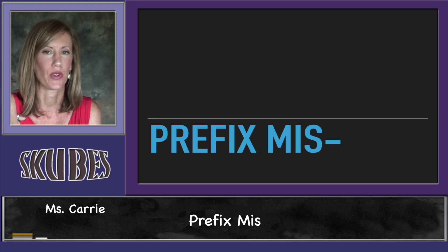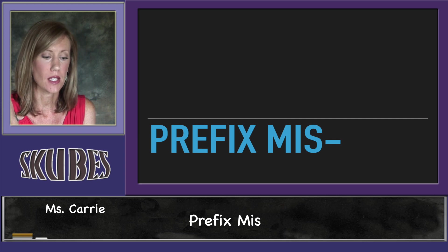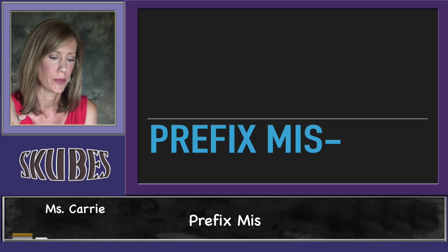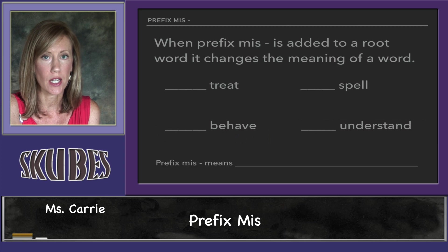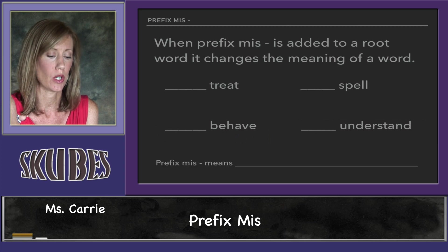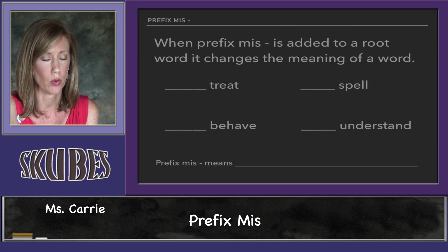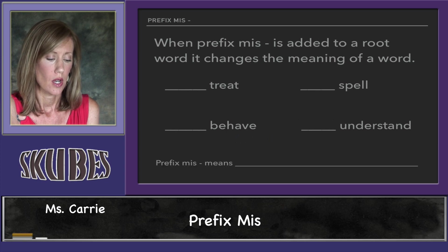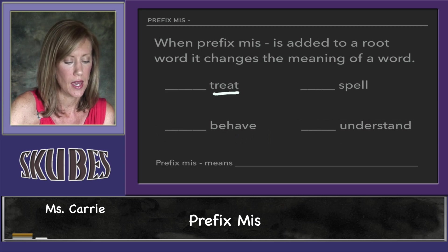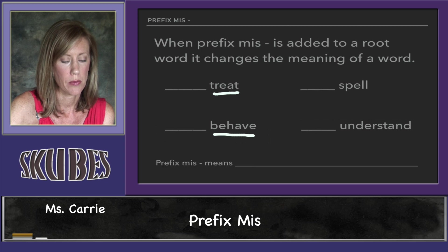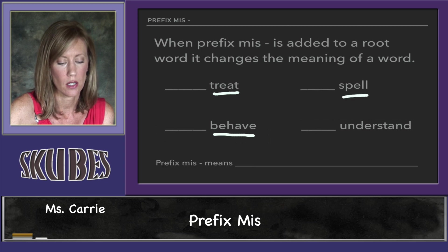This lesson is on the prefix 'mis.' When the prefix 'mis' is added to a root word, it changes the meaning of the word. Here we have four root words: treat, behave, spell, and understand.